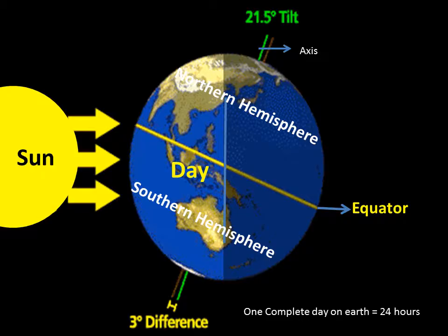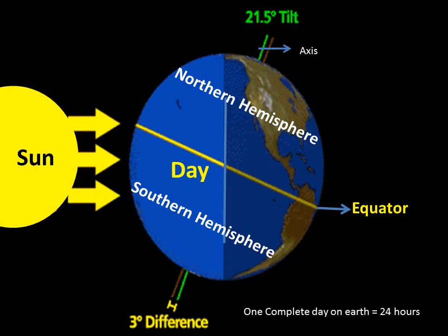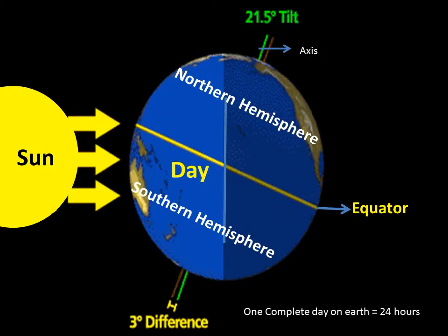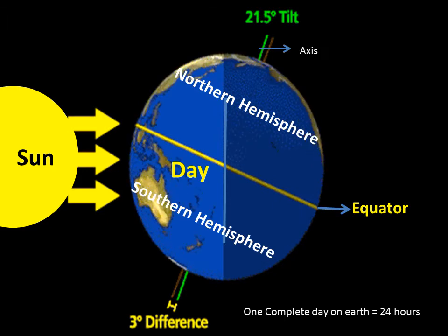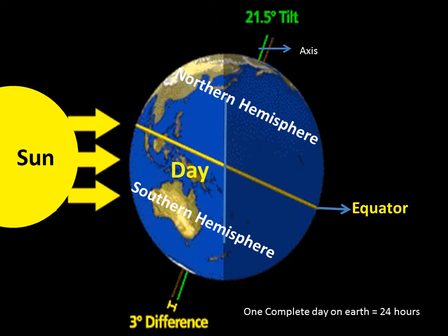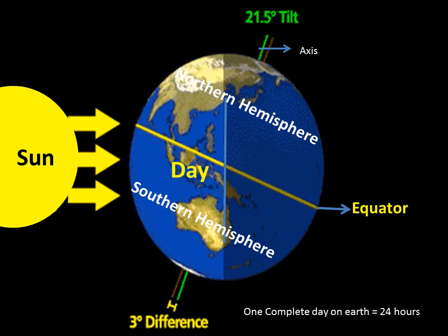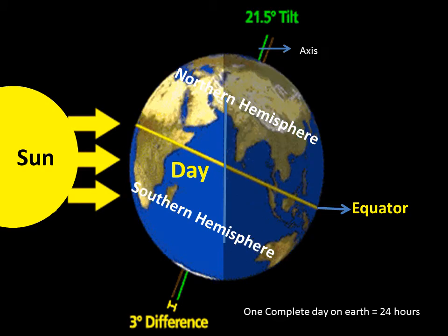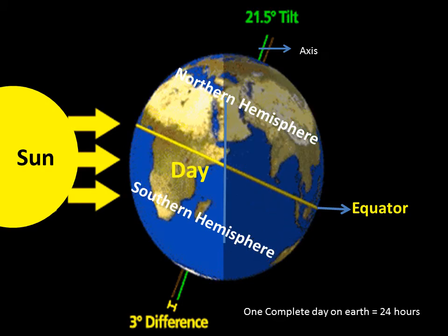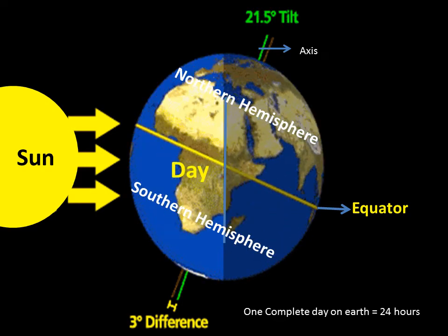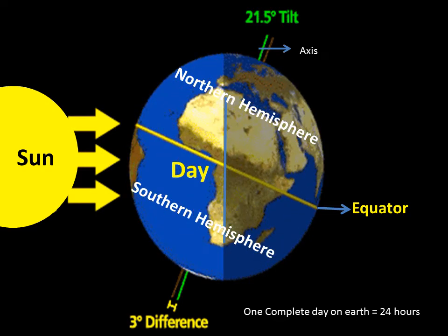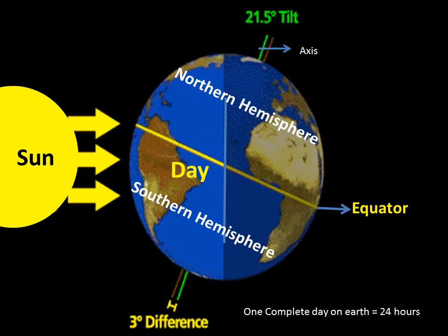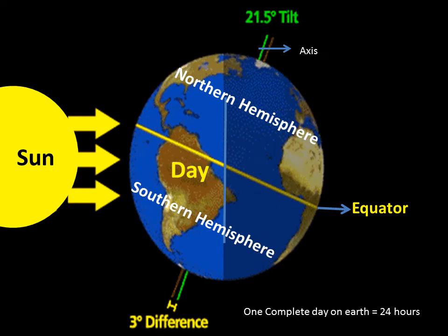The earth always spins in the same direction around its axis, from west to east. This spinning movement of the earth is called rotation. The earth takes 24 hours to complete one rotation.